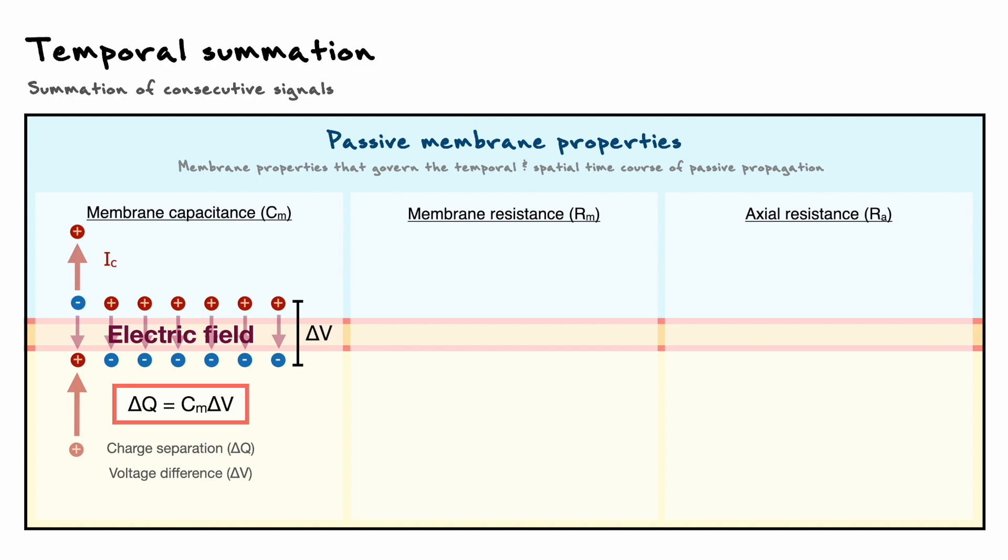From delta q equals CM delta v, we can derive the equation of the capacitive current if we consider the definition of the current, which is simply the derivative of charge over time.